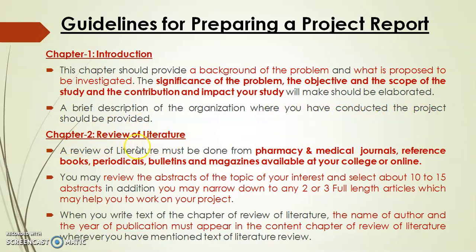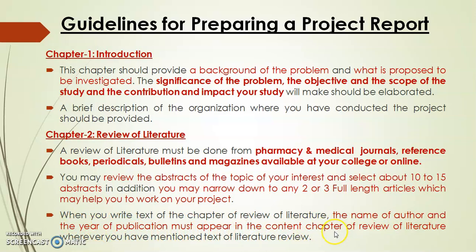The second chapter is Literature Review. A review of literature must be done from pharmacy and medical journals, reference books, periodicals, bulletins and magazines available at your college, or online. Whenever you visit the library, you will find these journals on certain racks — go, open and read those journals. Review the abstracts of the topic of your interest and select about 10 to 15 abstracts. You may then narrow it down to 2 to 3 full-length articles which you will utilize for your research work. The name of the author and year of publication must appear in the context when you prepare the chapter of review of literature for your final reporting.